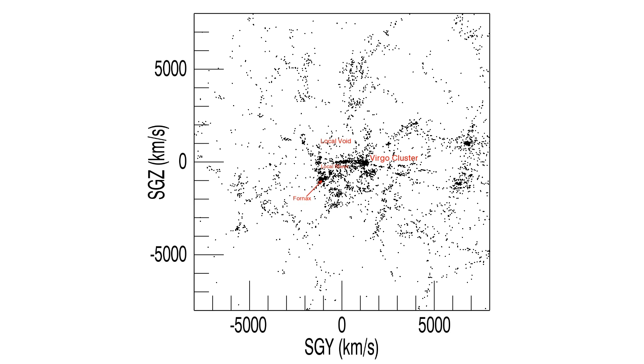We see intersections of the Great Wall on the right and the Southern Wall at the left. There are strikingly empty regions like the Hercules void and the Sculptor void.